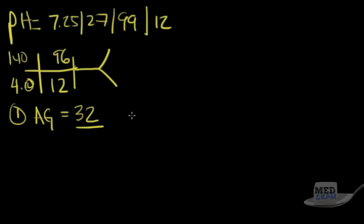The mnemonic for anion gap metabolic acidosis is MUDPILES: M for methanol, U for uremia, D for diabetic ketoacidosis — but also alcoholic ketoacidosis and starvation ketoacidosis — P is pyraldehyde, I is isoniazid or iron, L is lactic acidosis, E is ethylene glycol or ethanol, and S is salicylates — or also starvation ketosis.